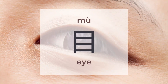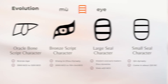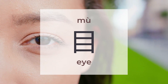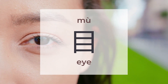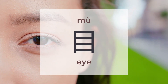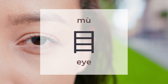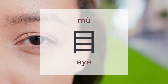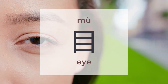目 means eye. There are around 647 characters to be found under 目. 目 is a pictogram with only one form. 目 relates to seeing or watching, and it appears mainly on the left or bottom of characters.